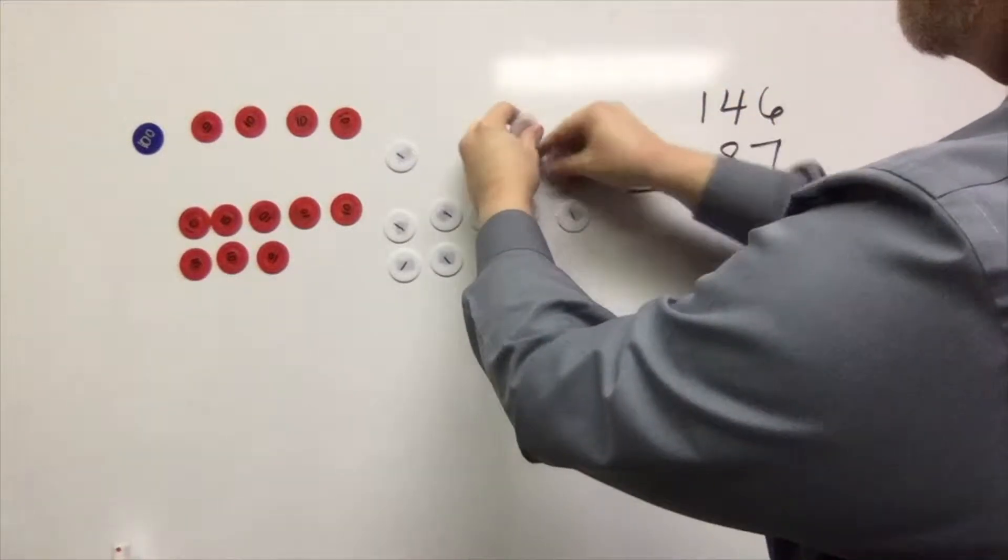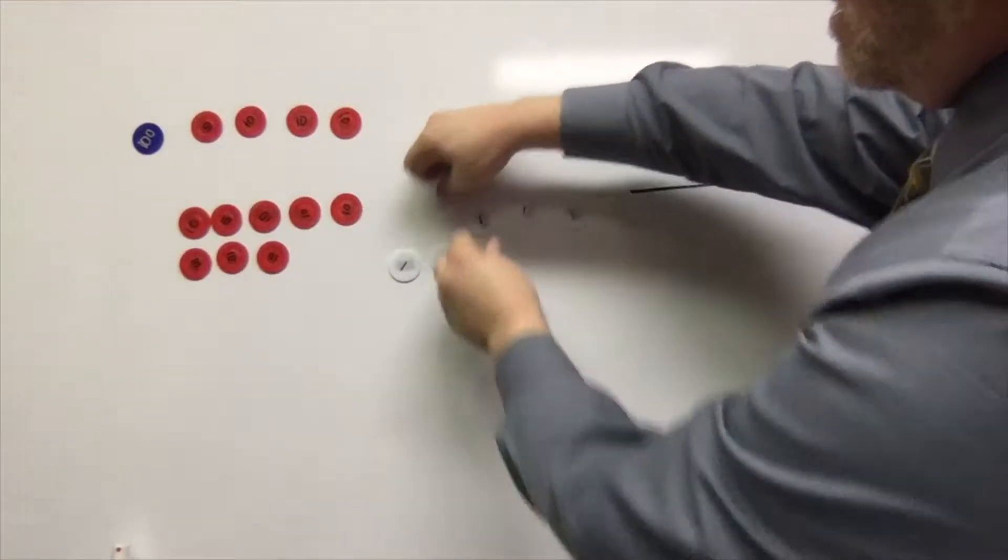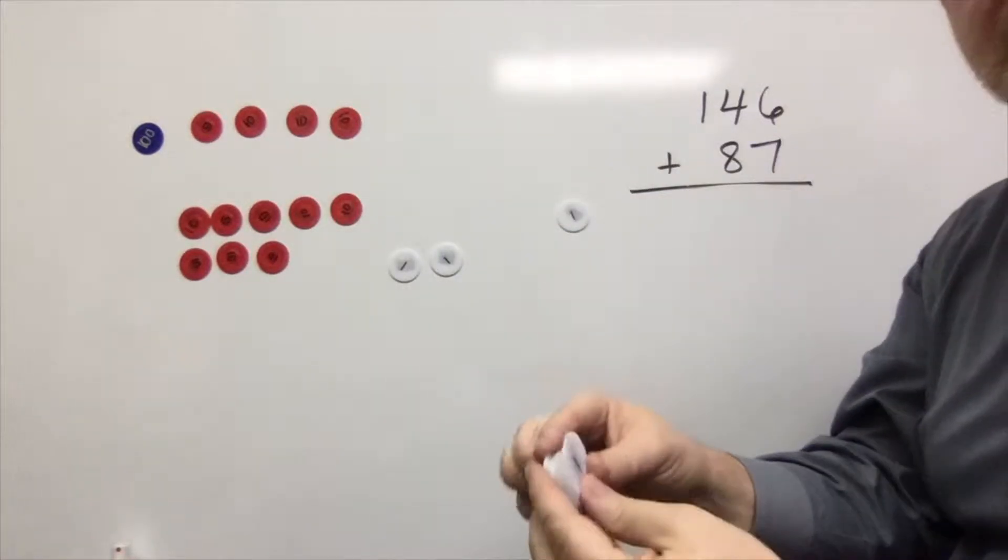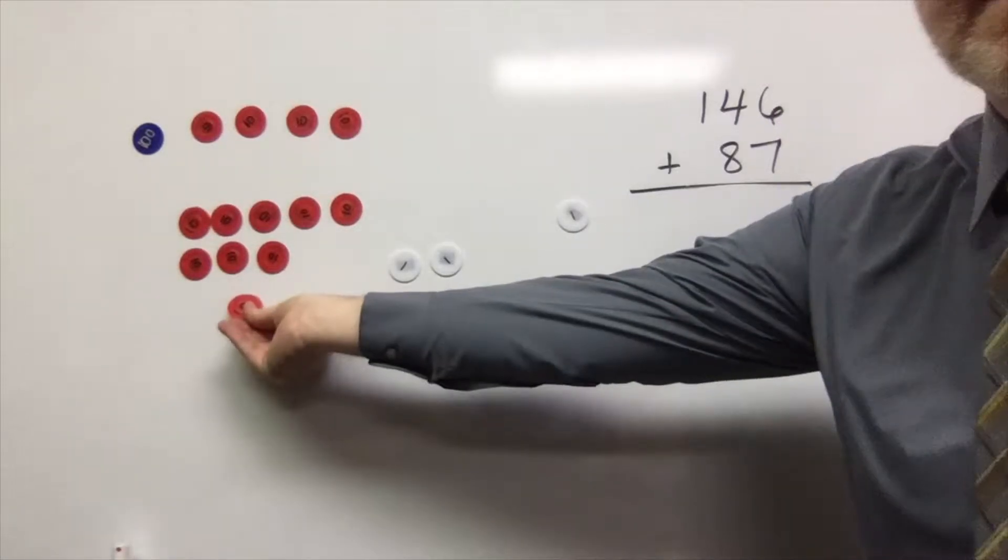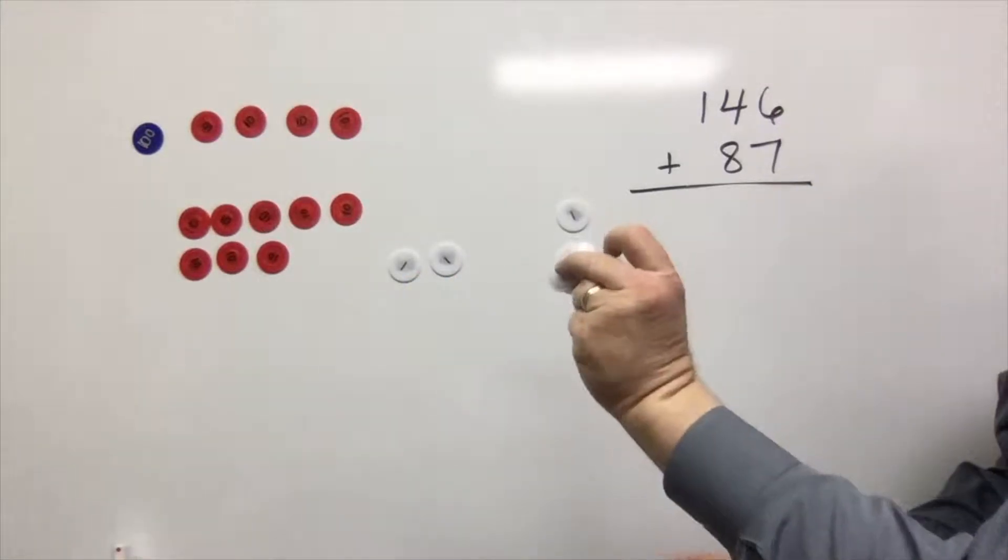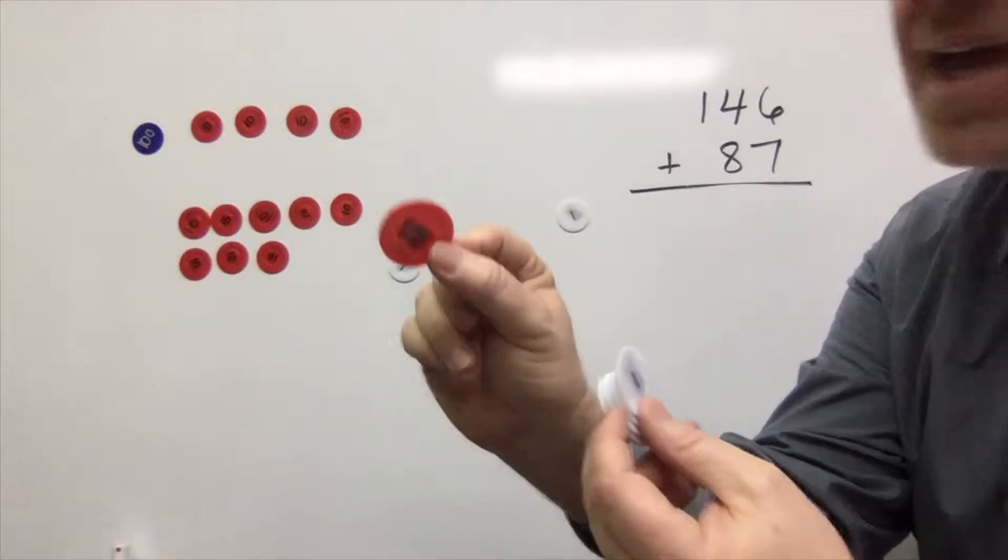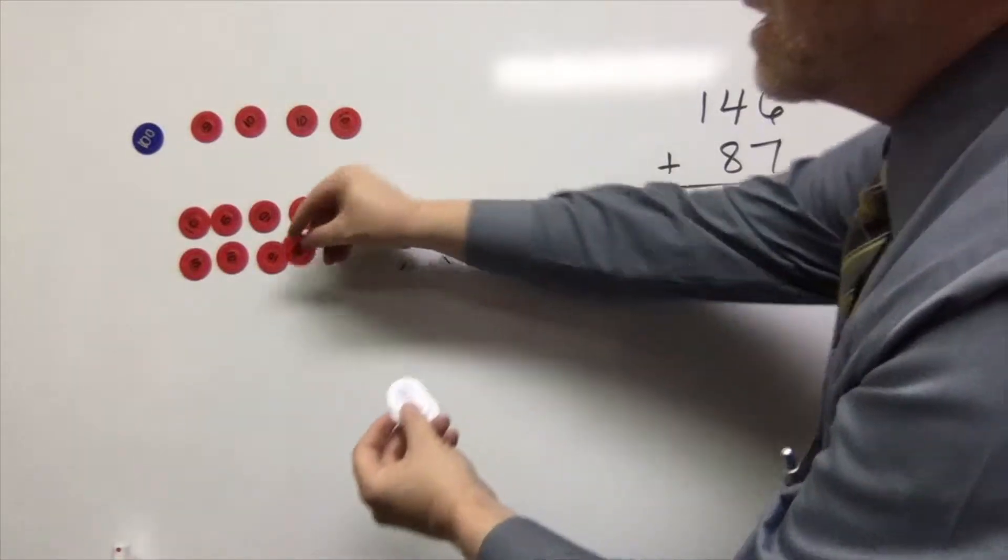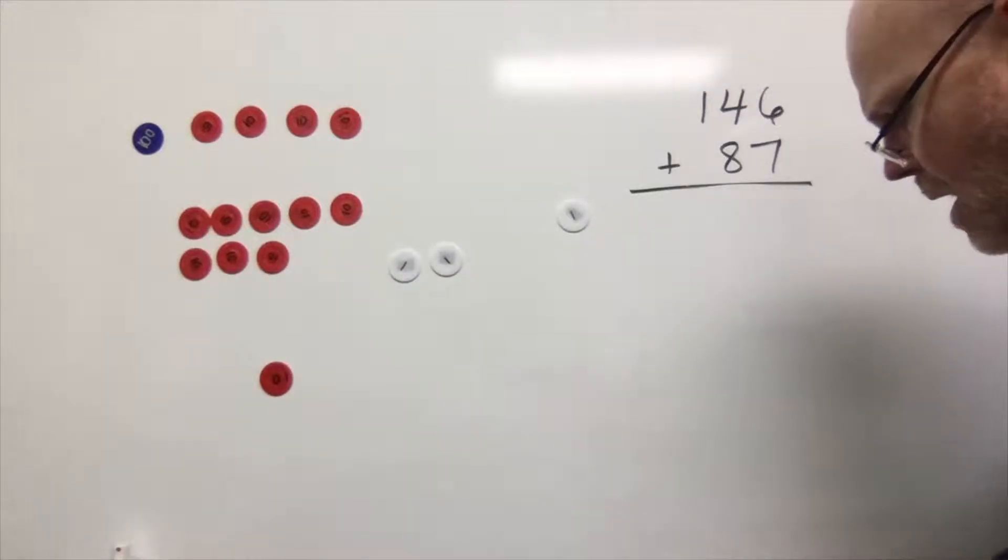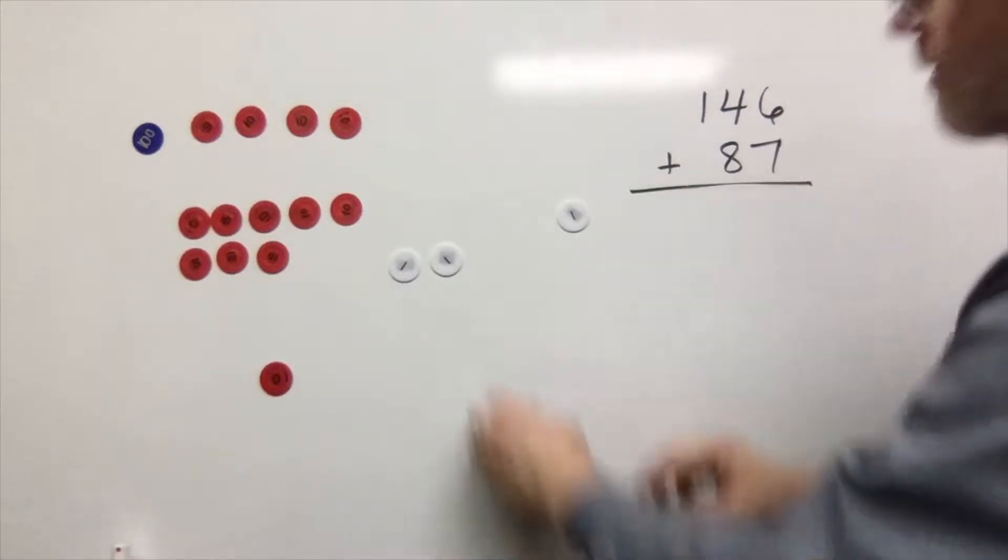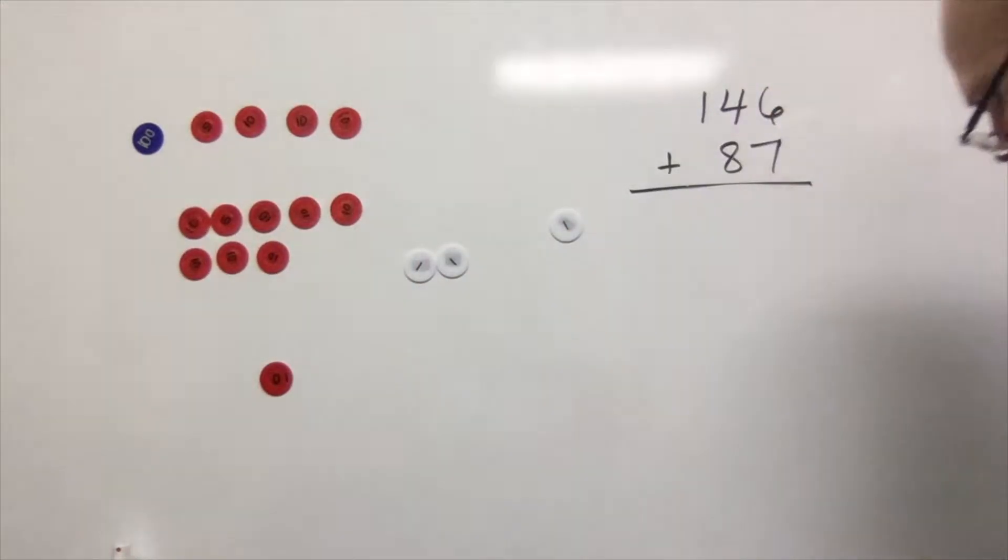So we have 13 ones and we know that we can cash in 10 of those. One, two, three, four, five, six, seven, eight, nine, ten. So I can cash in these 10 ones for a ten. I'm going to cash it in for a ten. In fact, I'll put it down here so that we can see it. And then what do we have left? We have three ones left over and we have a new ten.